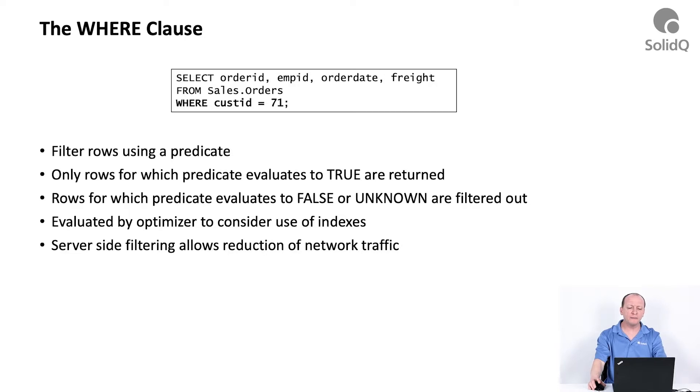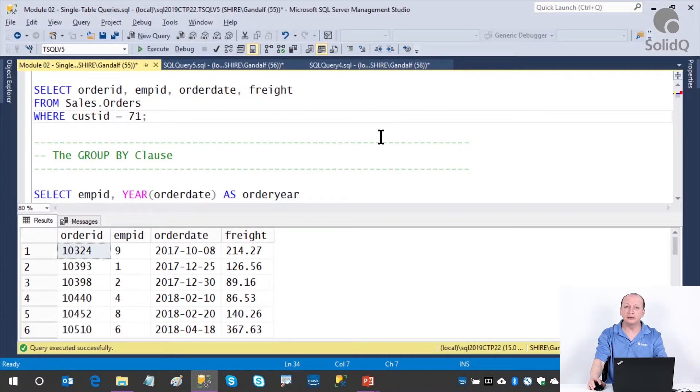Now, one of the requirements for a filter predicate to be considered a search argument and this way enable an efficient use of the index is that we do not apply any manipulation on the filter column. For instance, if we had any kind of function applied to the filtered column, this would break the searchability of the filter.